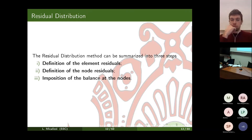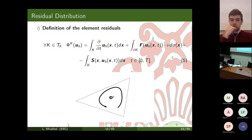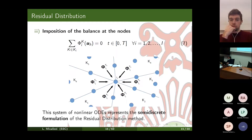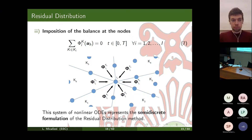Residual distribution can be summarized in three steps. First, we define the element residuals — the integral of our equation over each element, starting from a balance at the element level. Then we introduce node residuals satisfying the conservation relation (equation 6), isolating the contribution of each degree of freedom to the element balance. Finally, we impose the balance of the nodes — summing all node residuals from elements sharing a single degree of freedom — ending up with equation 7, a system of ODEs to solve in time.